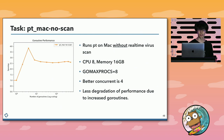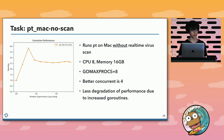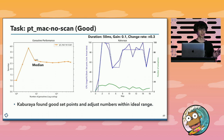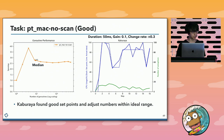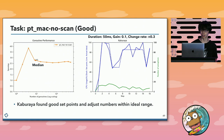This is also a good pattern. In this environment, I stopped the real-time virus scan process and ran the Platinum Searcher. The result shows 4 goroutines make performance good. This task shows less degradation of performance due to increased goroutines. In this environment, Kabu-Laya found good set points and adjusted numbers within the ideal range. Please pay attention to the blue dash line in the right graph — this shows that the feedback controller continued to set a new set point when CPU usage changed significantly. As a result, Kabu-Laya adjusted the number of semaphores within a good range. Not the best, but it achieved a good speed-up with as few concurrent goroutines as possible.